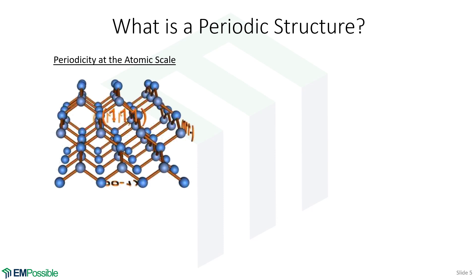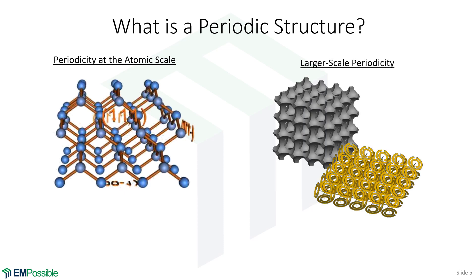It's important we define what we mean by periodic structure here, because many people will be thinking about crystal lattices, salt crystals, quartz, and periodicity at the atomic scale. That is not what we're talking about here. We're talking about periodicity at a much larger scale, usually on the order of a wavelength. So for radio frequencies, these structures are large enough that you could stick your finger through the holes. We're talking about periodicity on the order of the wavelength of the wave.